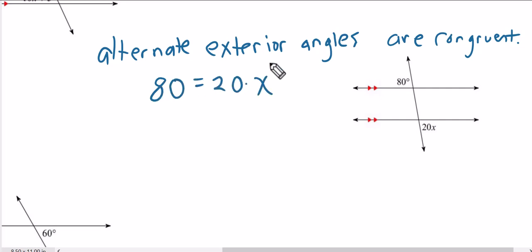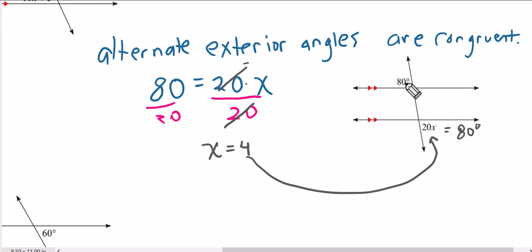We're going to solve for x. That is a value of x. And if I were to plug this 4 back into here, 20 times 4 is 80 degrees, which further proves the idea that alternate exterior angles are congruent, in this case. Because if this is 80 degrees, this has to be 80 degrees.